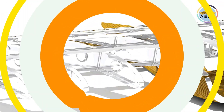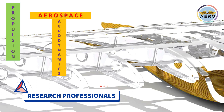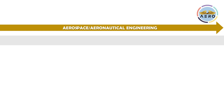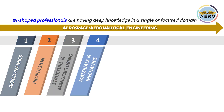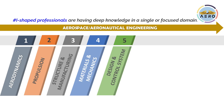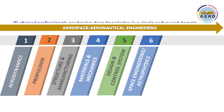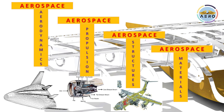Before proceeding to the aerospace research topics, you must understand the sensible professional profiles: I-shaped, T-shaped, Pi, and M-shaped professionals. I-shaped professionals have deep knowledge in a single focused domain. In aerospace, focused domains include aerodynamics, propulsion, structures and manufacturing, materials and mechanics, design and control systems, space engineering or astrodynamics, and aviation management or aerospace medicine.